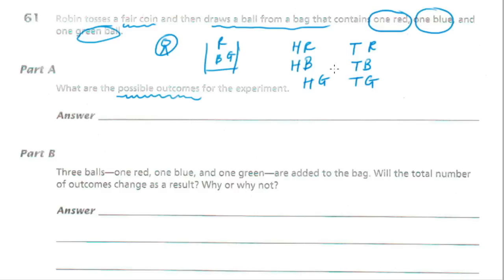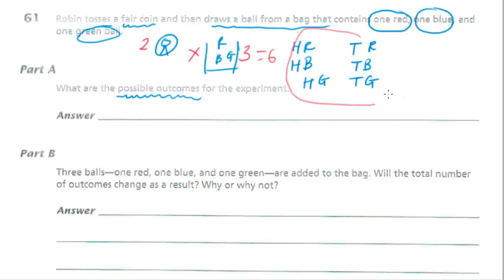So I'm going to write it as a list. It could be heads and red, heads and blue, heads and green, or tails and red, tails and blue, tails and green. There are six outcomes. We should check using the fundamental counting principle: the number of outcomes on the coin is two, the number from the bag is three, so two times three equals six.